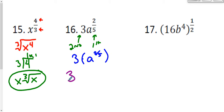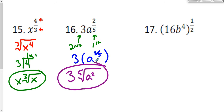We can take the a and rewrite the two-fifths as a radical. The two will be the exponent of a, and the five will be the index. This is as simplified as this problem can get. We need five of something to bring anything out of this radical, and I only have two a's, so that's as far as we can go.